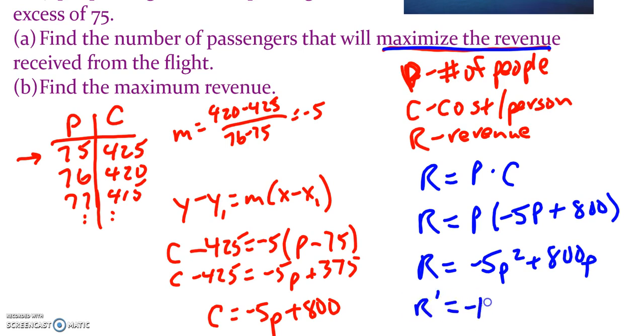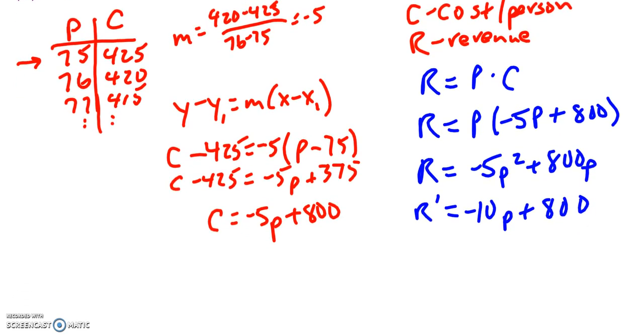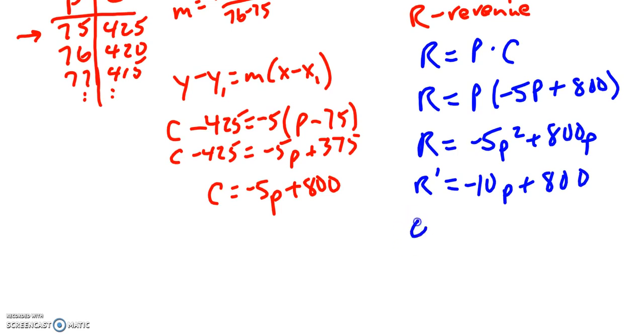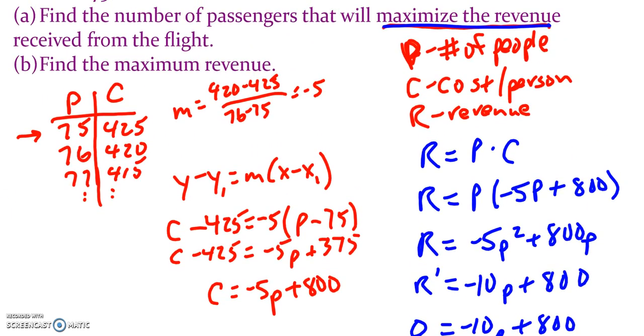So we'll take the derivative and find our max. We want to do our first derivative test, so set it equal to 0 and solve. Subtract over the 800 and divide by negative 10. So P equals 80. Let's go back and read exactly and make sure we're finding what we need to here. Part A, find the number of passengers that would maximize the revenue. So we did find P. P is the number of people. So Part A, this would be 80 people or 80 passengers.